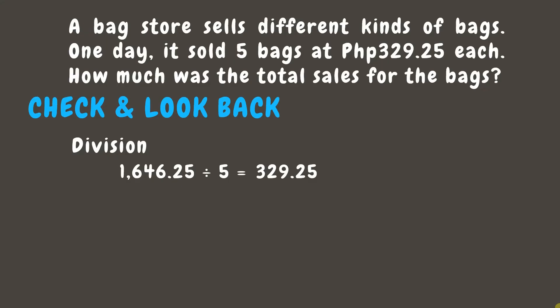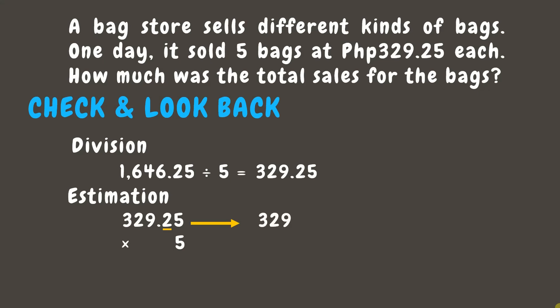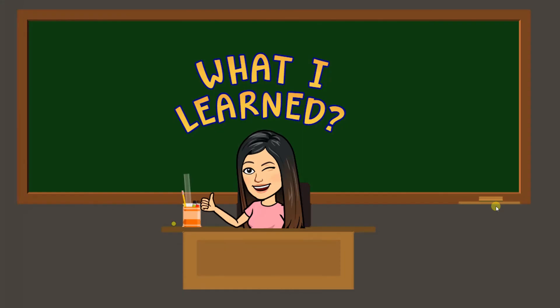Another strategy would be using estimation. We can estimate the numbers before multiplying. 329.25 rounded off is 329, since 2 is less than 5, while 5 remains the same since it's already a whole number. 329 times 5 is 1,645, which is close to our answer. This means our answer is correct. Great job, students! Now here are the things that you learned today.